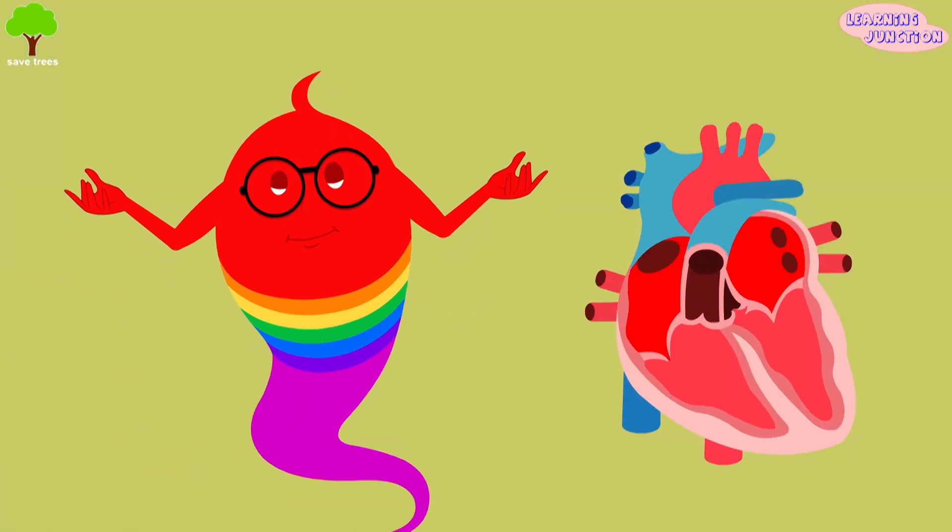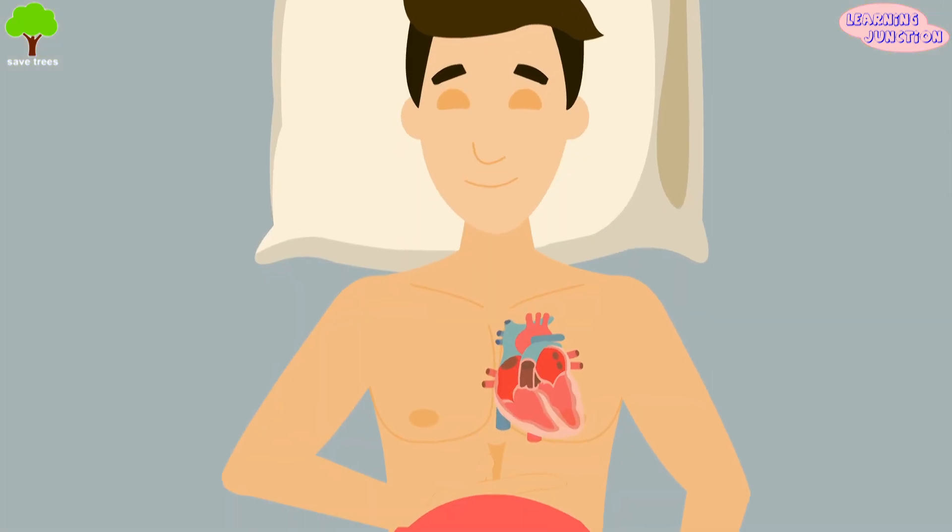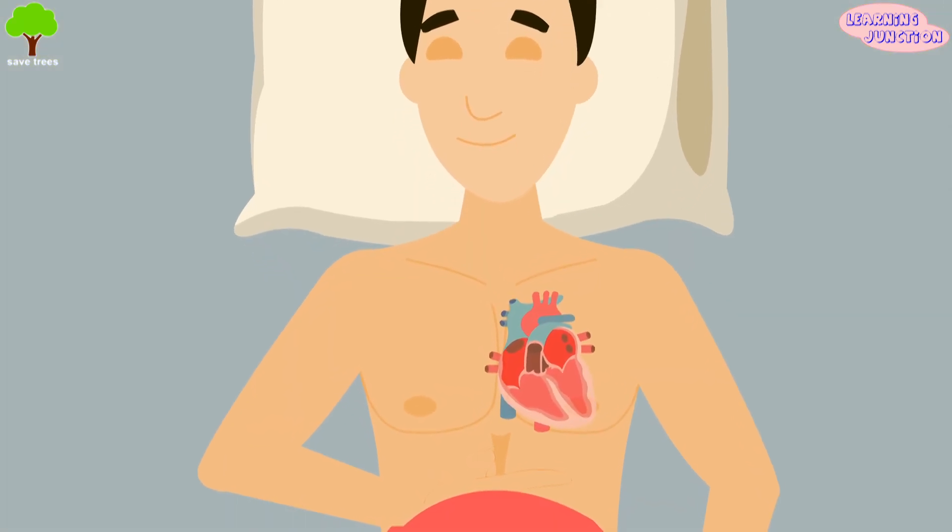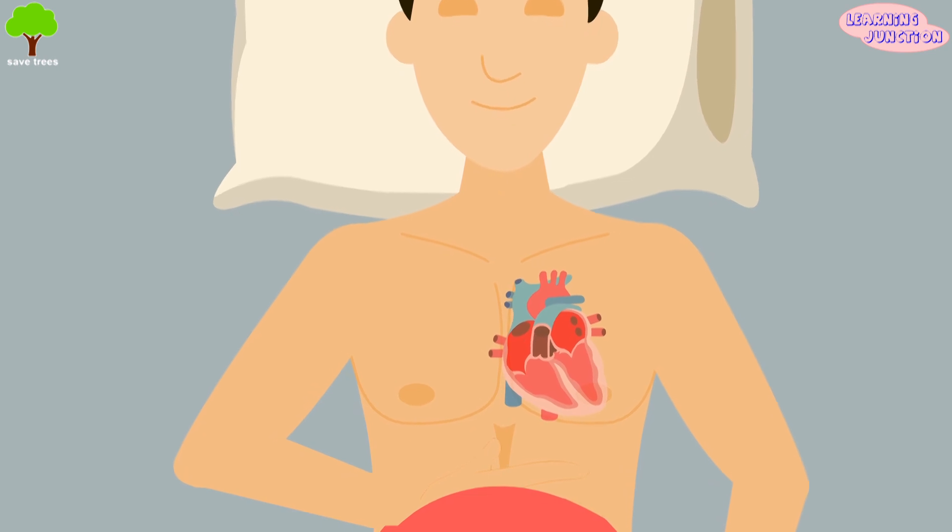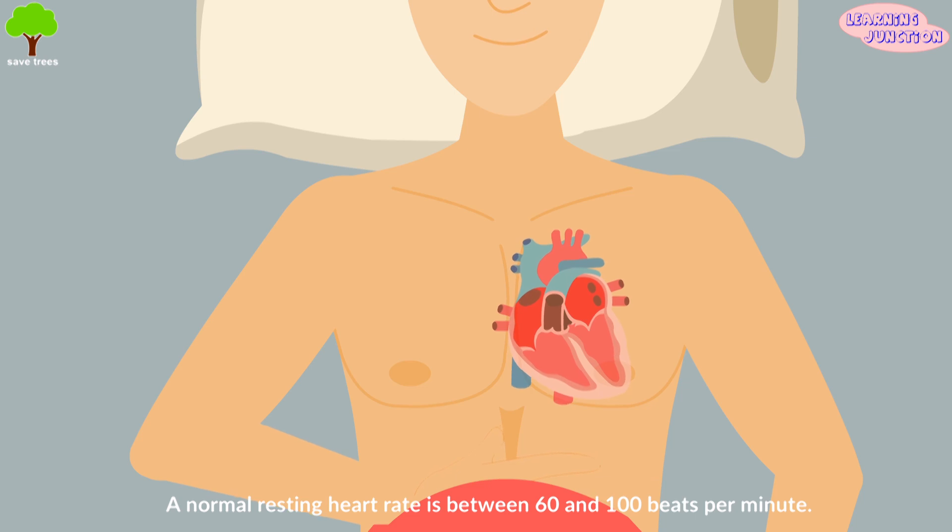The purpose of our heart is to pump blood through our body. Even when we sleep it keeps beating. Normal heart rate varies from person to person, but a normal range for adults is 60 to 100 beats per minute.